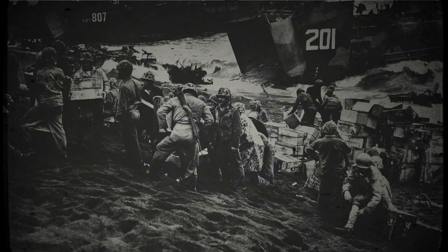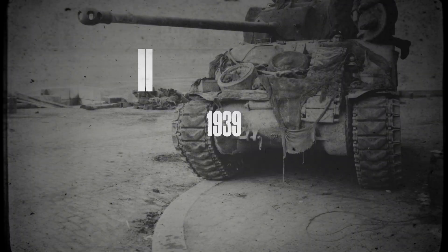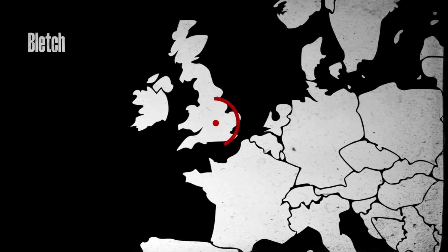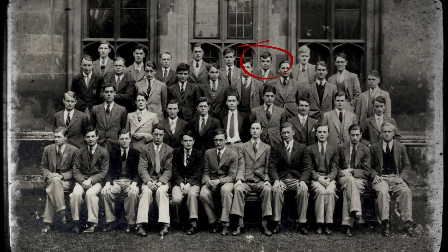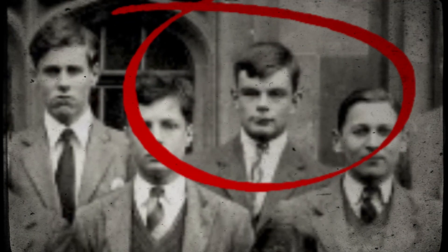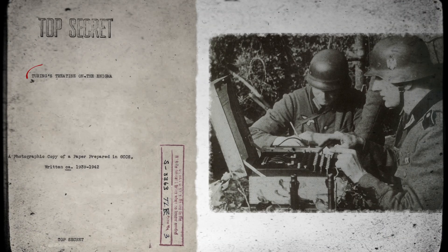Our story begins in 1939, at the beginning of the Second World War. At Bletchley Park, United Kingdom, a group of scientists, led by mathematician Alan Turing, work on a top-secret project, cracking German cipher device Enigma.